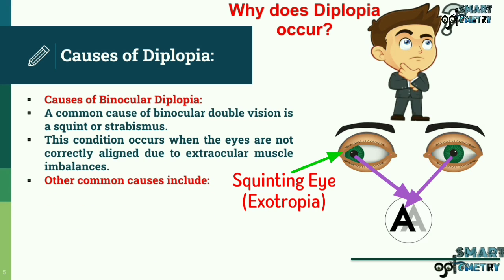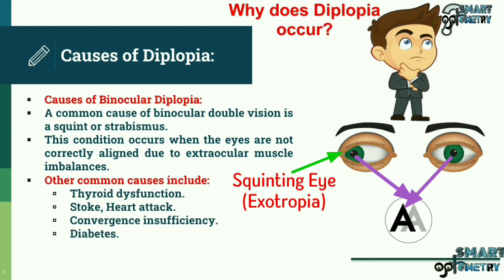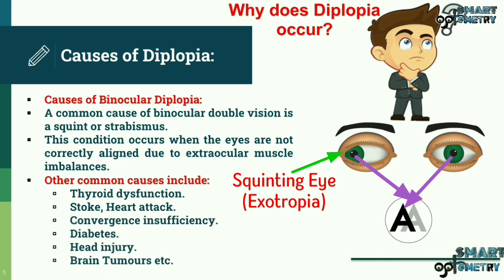Other common causes of binocular diplopia include thyroid dysfunction, stroke, heart attack, convergence insufficiency, diabetes, head injury, brain tumors, and more.